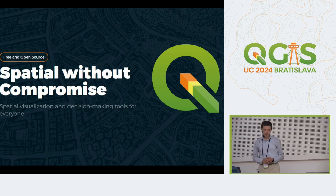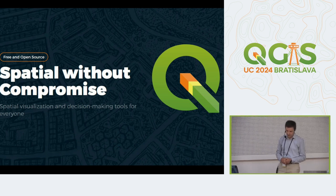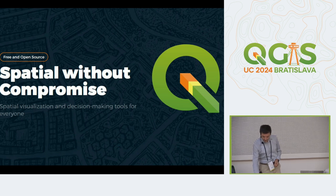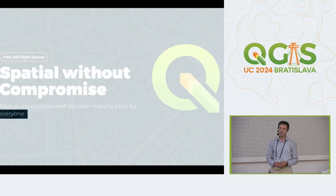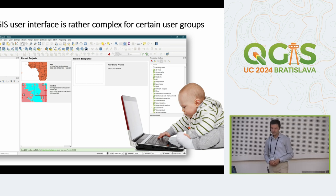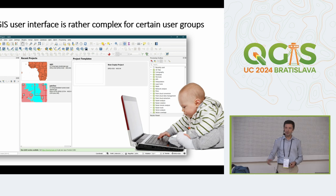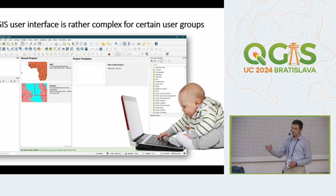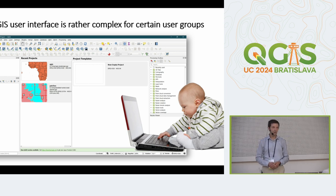QGIS — the new website, which we learned a lot about today — has a very nice motto: special visualization and decision-making tools for everyone. And it is really literally everyone, because it's an open and free software and it enables everybody interested to use the GIS technology. But in fact, when we look at the user interface, to be honest, it's a little bit rather complex for certain user groups. The user interface with lots of toolboxes, tool buttons, and panels is very good if you are really expert on the topic.